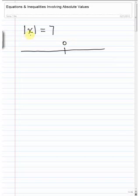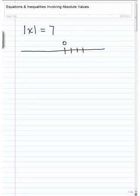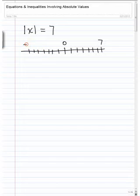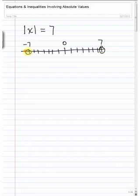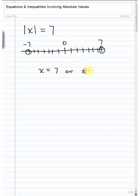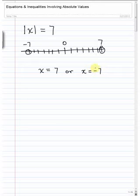We can think of this as all the points x that are 7 units away from 0. If you look at the number line, there are two ways to go. We could go to the right 7 units to the number 7, or we could go to the left 7 units to negative 7. So there are two points which are 7 units away from the origin: 7 and negative 7.